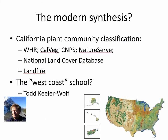Has there been some kind of modern synthesis about communities? Sort of. We recognize that co-occurring species help us classify things into communities — such as Wildlife Habitat Relations, CalVeg, Native Plant Society, or NatureServe. We have a national land cover database and LandFire where you can look up the community type for any place in the country. Todd Keeler-Wolf was instrumental in reconciling methods — pushing to use the good parts of releves and phytosociological methods together with the good parts of statistical ecology, to identify where you'd put plots and how you'd sample them.